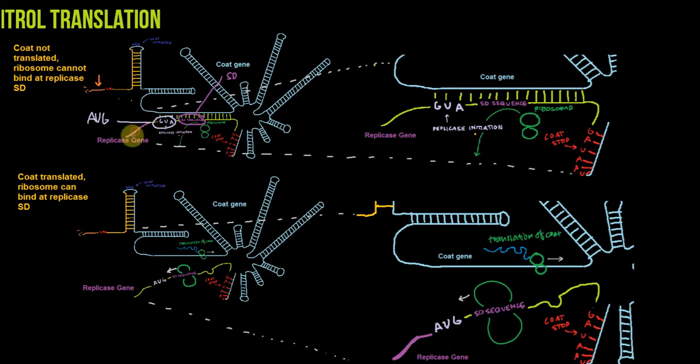And so what you can tell is that if I zoom in over here, the Shine-Dalgarno sequence and this replicase initiation codon is sequestered in this stem structure because of base pairing with the coat gene. And because the Shine-Dalgarno sequence is base pairing with something else, if we want translation of the replicase gene, it simply can't happen because the ribosome can't access this already base-paired Shine-Dalgarno sequence.